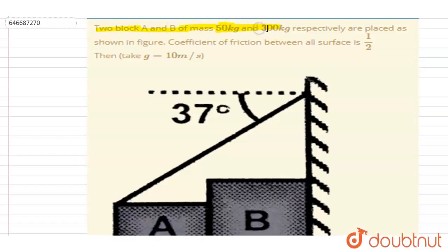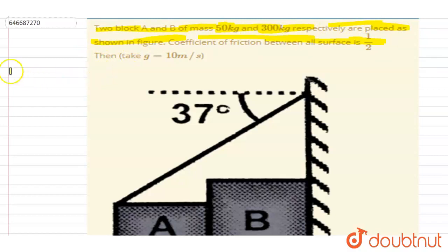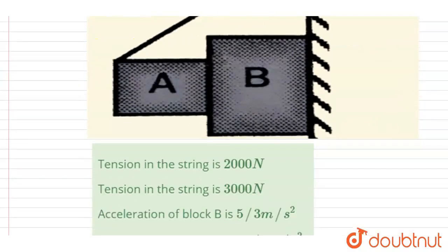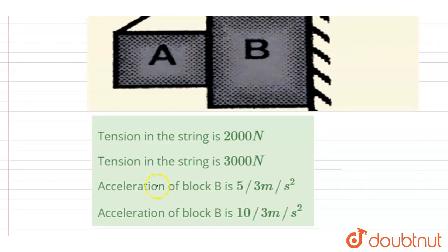Two blocks A and B of masses 50 kg and 300 kg are placed as shown in the figure. The coefficient of friction between all surfaces is 1/2. You have to determine which option among A, B, C, D is correct — the tension in the string and acceleration of block A.